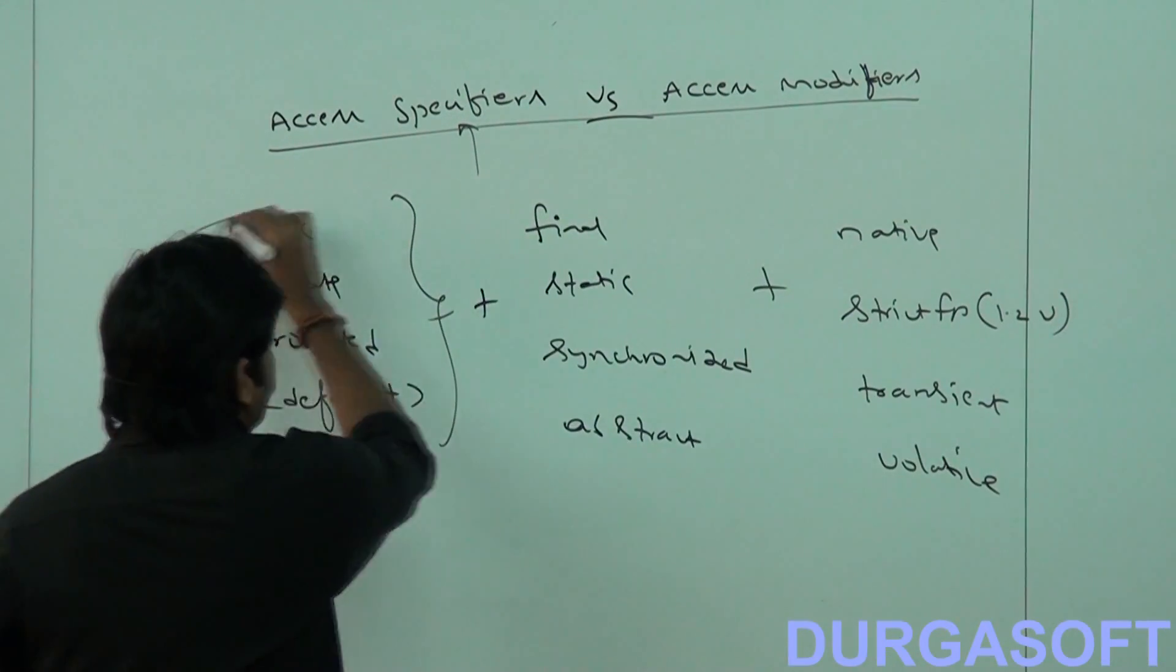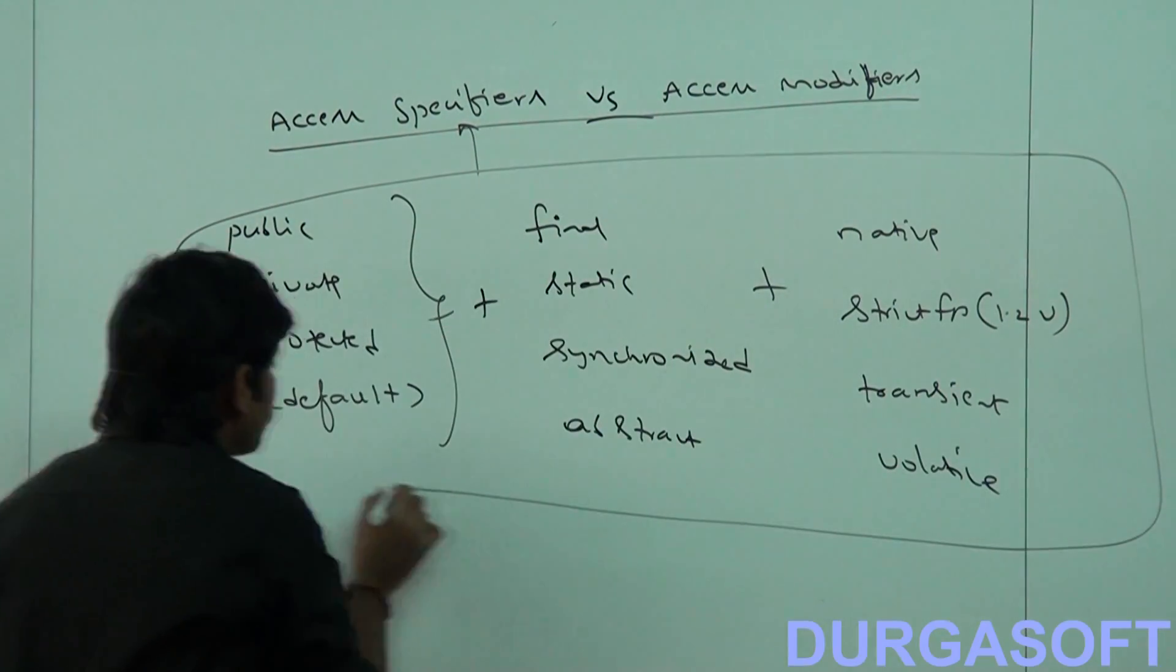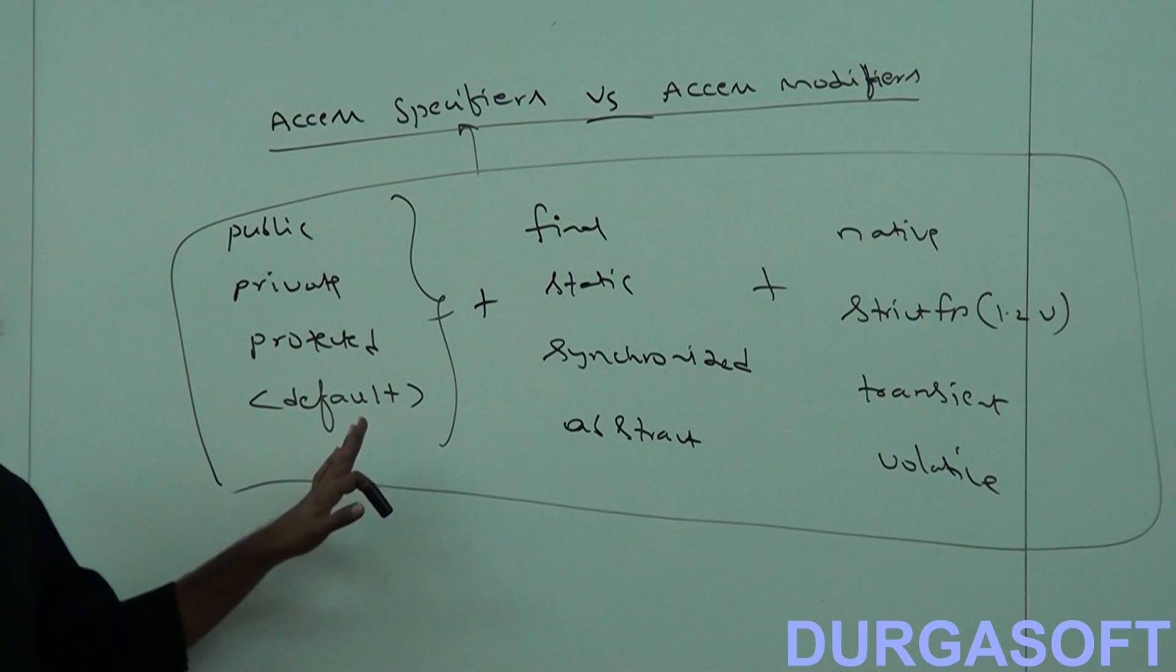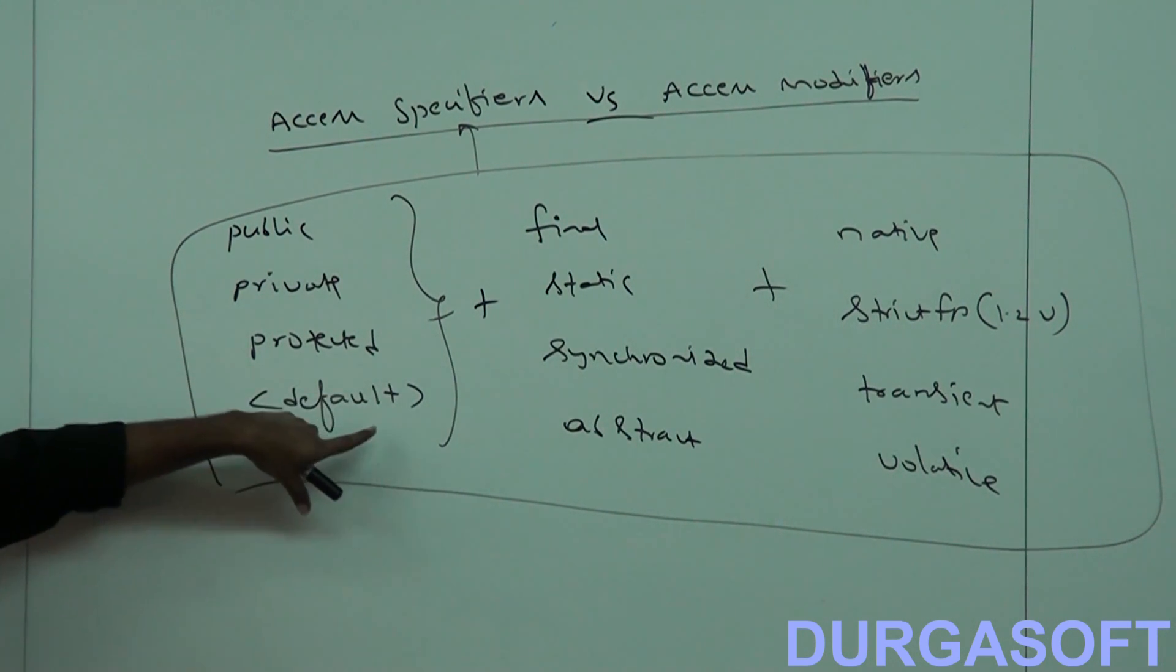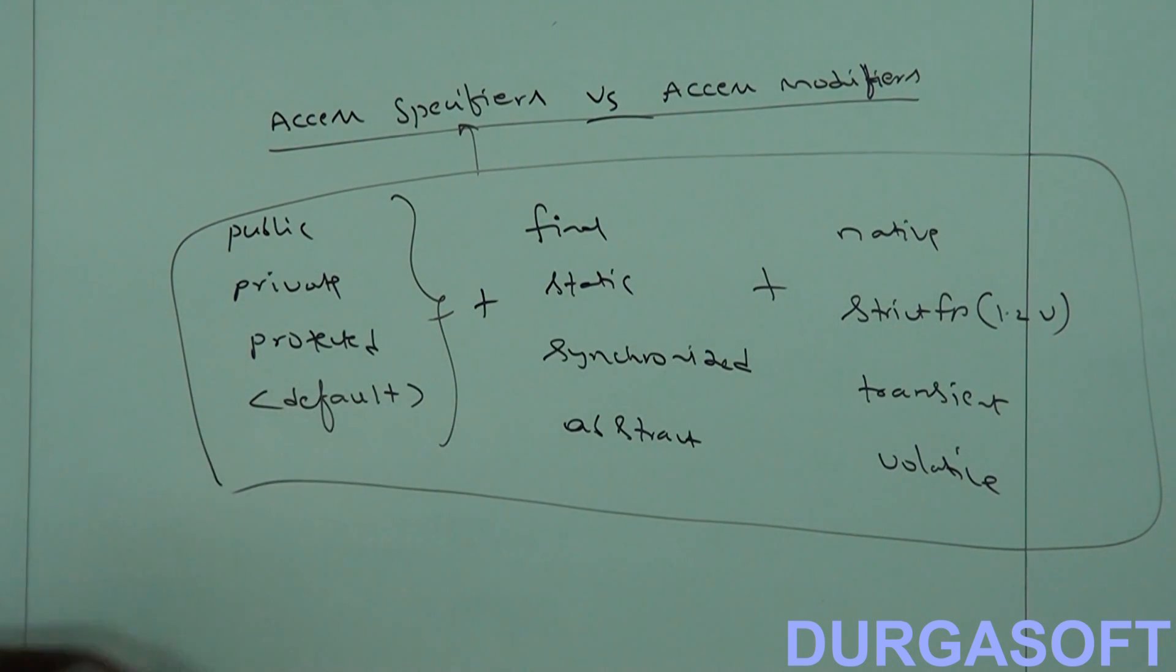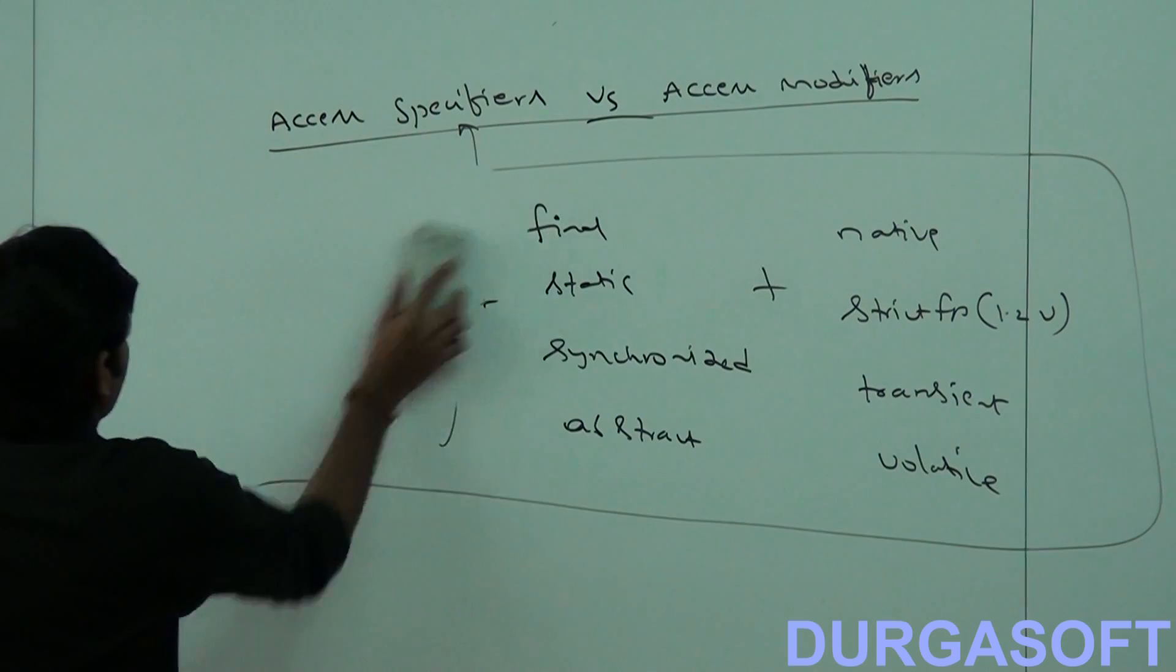All these 12 are by default considered as modifiers only, but not specifiers. I hope it is clear. Sometimes maybe, where is the proof for that? There may be a chance of asking some people, can you please show the proof? Simple proof for you. I hope you took this one.